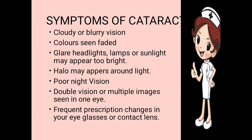The next symptom is poor night vision. The patient is not able to go outside at night because he or she finds it very difficult to cross the road due to glare from headlights and lamps. The light from different sources may shine in the patient's eye and they will not be able to see anything for some time.